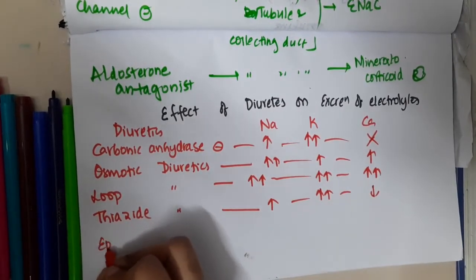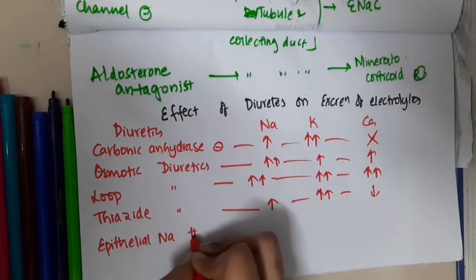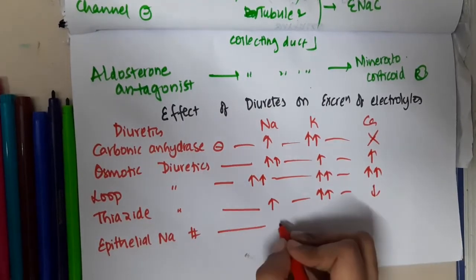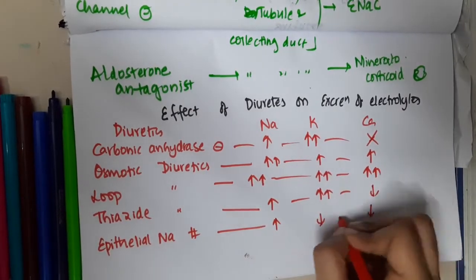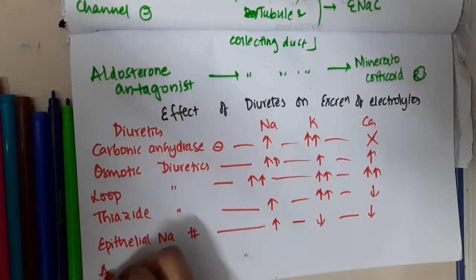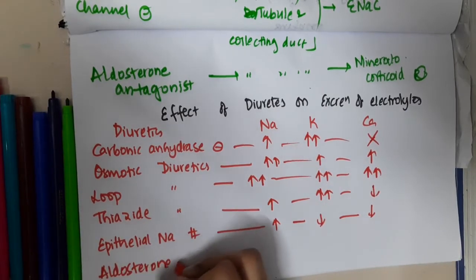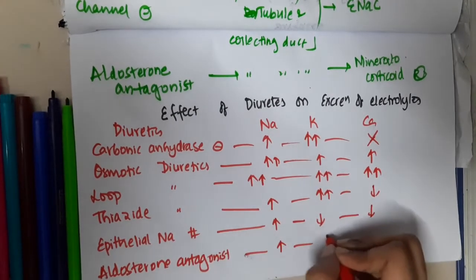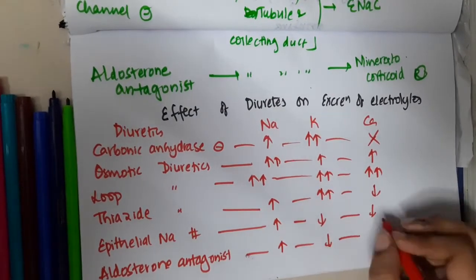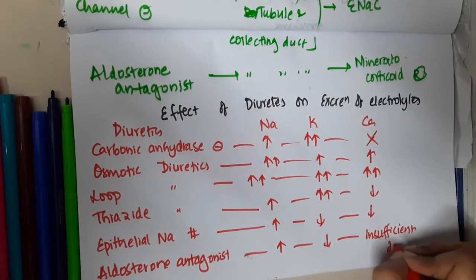Then we have epithelial sodium blockers. These will increase sodium excretion, decrease potassium excretion, and decrease calcium excretion. Then we have aldosterone antagonists. Aldosterone antagonists will increase sodium excretion, decrease potassium excretion, and they have insufficient data for calcium.